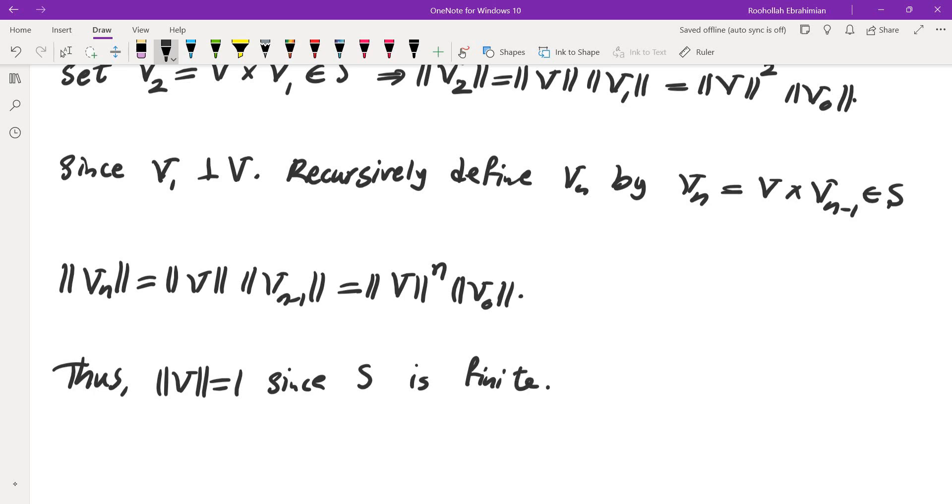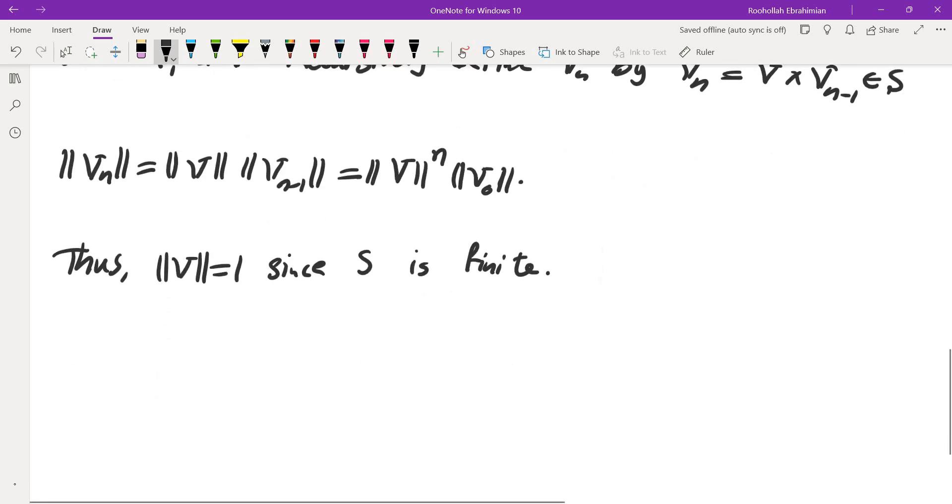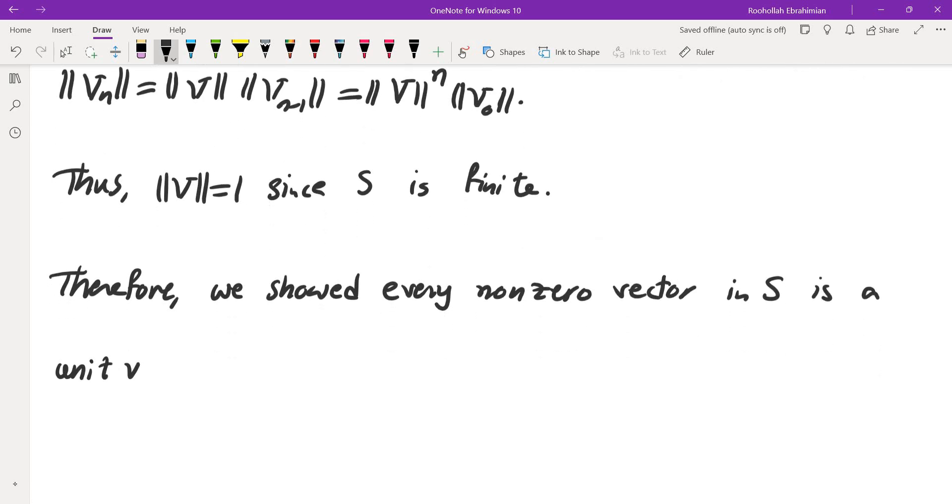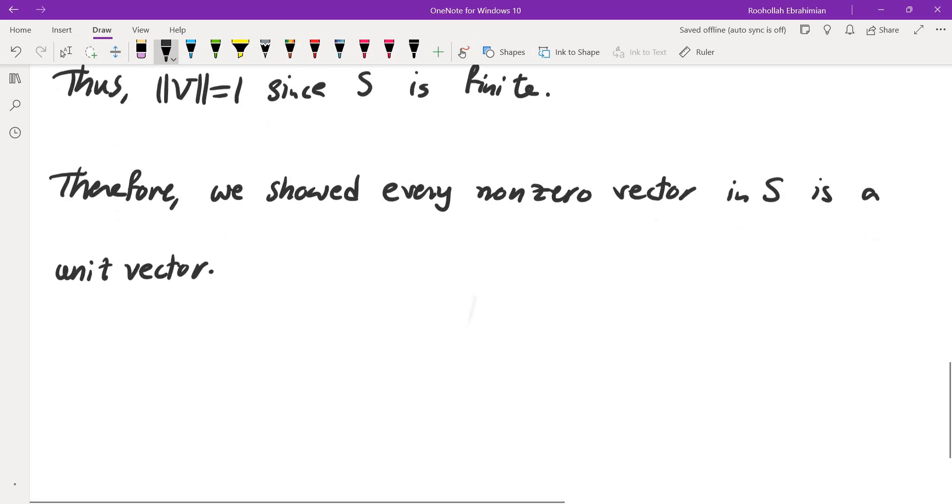Since S is finite, you cannot have elements in S that have their length approach infinity or approach 0. So what we showed is that, therefore, we showed every non-zero vector in S is a unit vector. So everything in S is a unit vector except for 0.